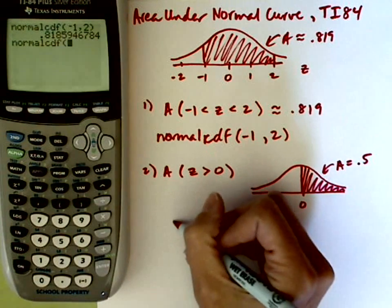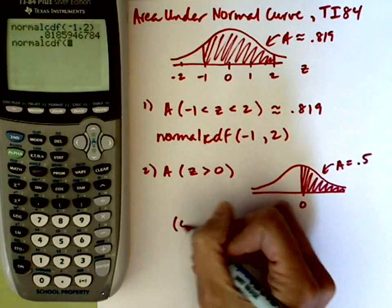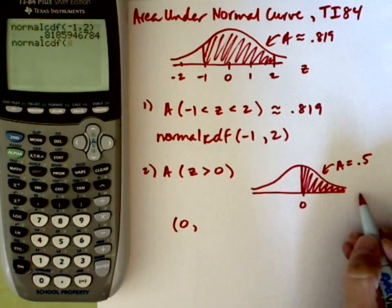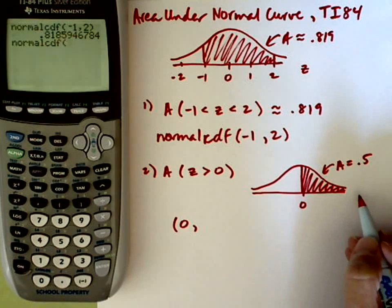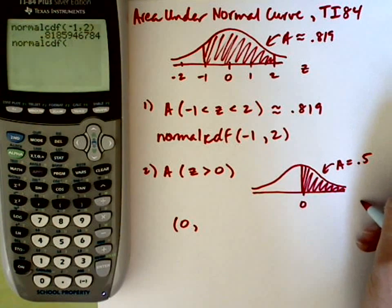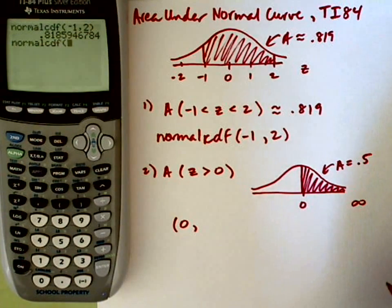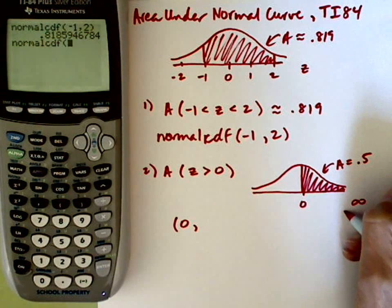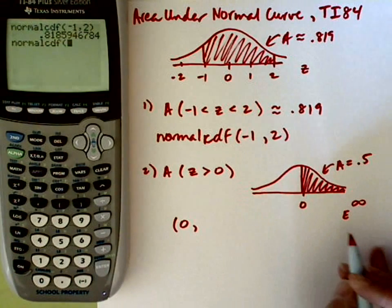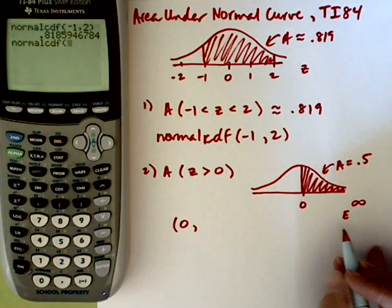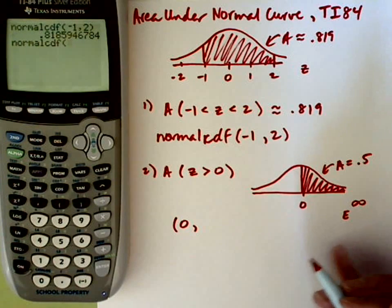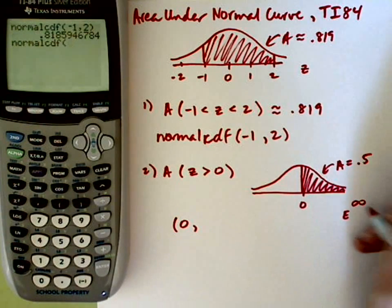For this one, I'm going to be looking at 0 for the leftmost, and then for the rightmost, I want to go on forever here. Well, there's two ways to signify that you're going off to infinity, essentially. You can use the exponent key, this is a scientific exponent key, and just say, like 1 times 10 to the 99th power or something.